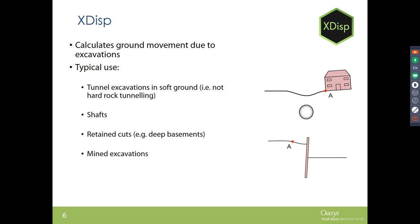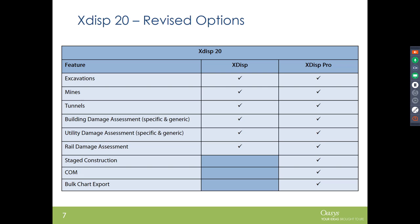XDISP means excavation displacement. There is another program called PDISP, which is pressure displacement, and both can be combined. XDISP calculates ground movements due to excavations — typically for tunnel excavations, soft ground shafts, retained cuts, and mined excavations. It has been developed extensively and is used heavily on major projects around the world.